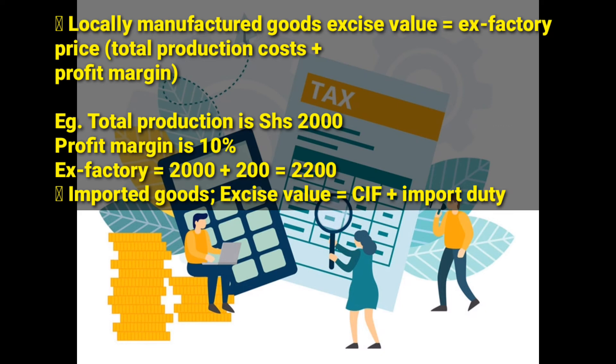If they give you the ad valorem rate — say, excise duty will be charged at a rate of 20% — then to get the excise duty you multiply 20% × 2,200 to get the excise duty. For imported goods, the excisable value equals CIF (cost, insurance, and freight) plus the import duty.